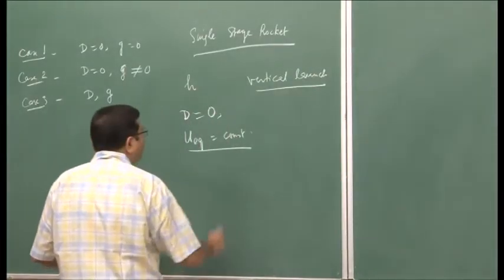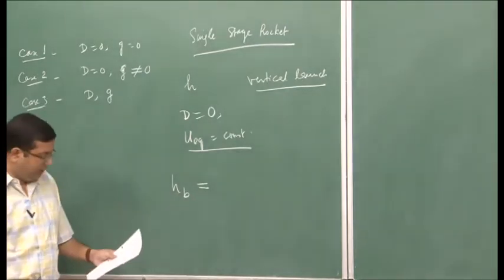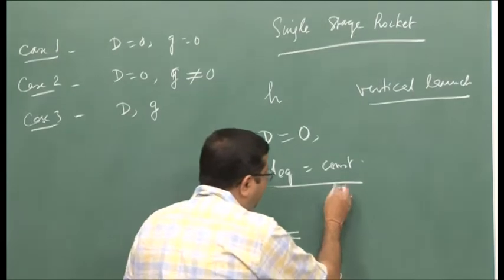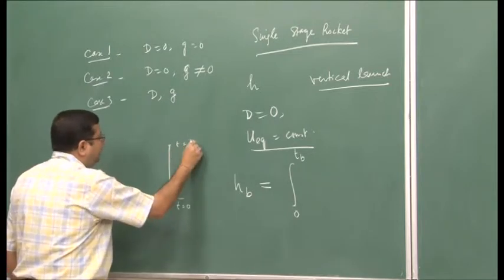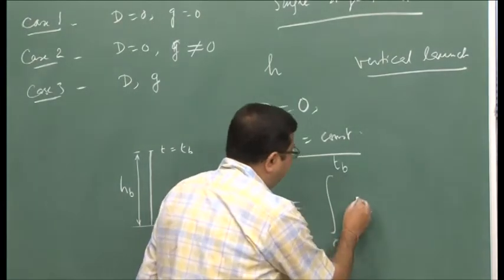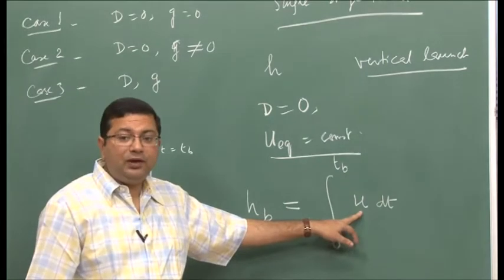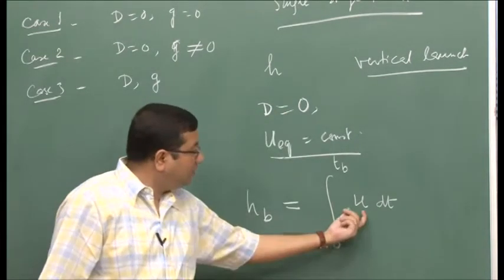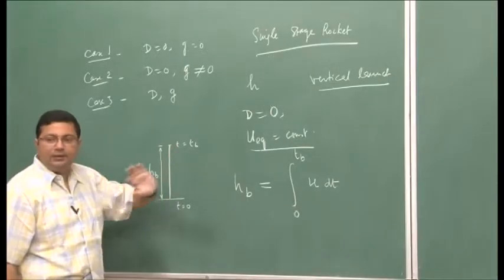For a vertical flight, let us first look at the burn-out condition h_b. We are launching at time t = 0, and at time t = t_b the rocket reaches height h_b. If the instantaneous velocity is u, then the height is the integral of u dt. The velocity u is not constant — the vehicle is accelerating — but the exhaust velocity is constant, and we assume no drag. This integral of u dt from t = 0 to t_b gives the height attained during the powered flight sequence.